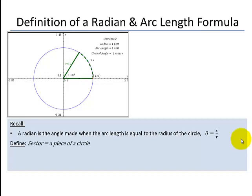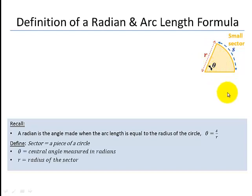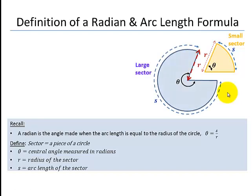If we apply this to a sector — which is just a piece of a circle — we have three characteristics: arc length, central angle, and radius. We can also look at a larger sector that has the same characteristics: radius, central angle, and arc length.